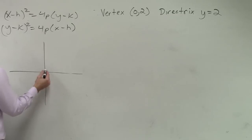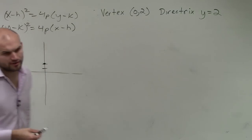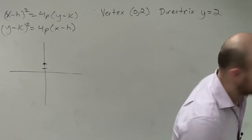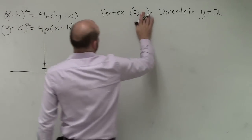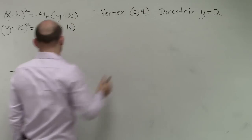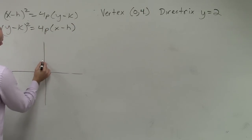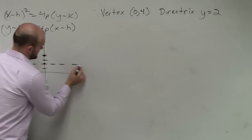So let's go ahead and just graph what we have. So we have a vertex at 0, 2. Then we have a directrix at whatever. Vertex is at 0, 4. So my vertex is at 0, 4. Directrix is at 0, 2. Okay.